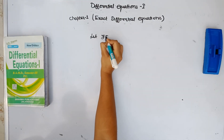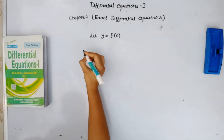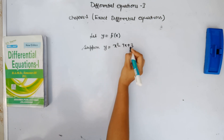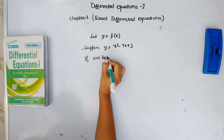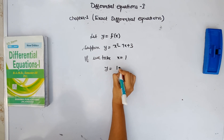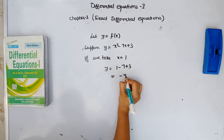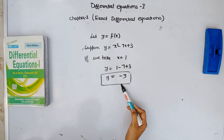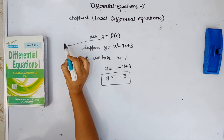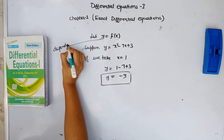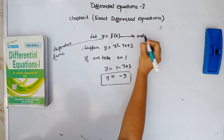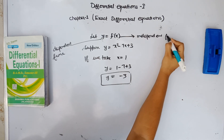Let y be a function of x. Suppose y is equal to x squared minus 7x plus 6. If we take x equal to 1, then y is equal to 1 minus 7 plus 6, which equals minus 3. It means for each value of x there is a corresponding value of y. This implies y depends upon x. Therefore, y is called the dependent function and x is the independent function.